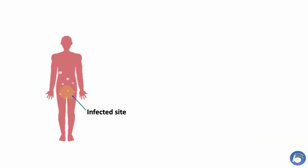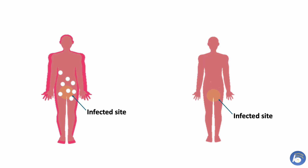Normally the infected site is full of white blood cells like neutrophils that send signals to the immune system that something is wrong, and the immune system becomes active. But in necrotizing fasciitis, neutrophils cannot reach the affected area and become silent. Therefore, bacteria easily evade the immune system and spread into other tissues.